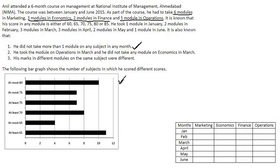combining both constraints, we get that the 6 modules of marketing will be placed 1 in January, 1 in February, 1 in March, 1 in April, 1 in May and 1 in June. He took the module on operations in March and he did not take any module on economics in March. There was 1 module in January, 2 in February, 3 in March, 3 in April, 2 in May and 1 in June.